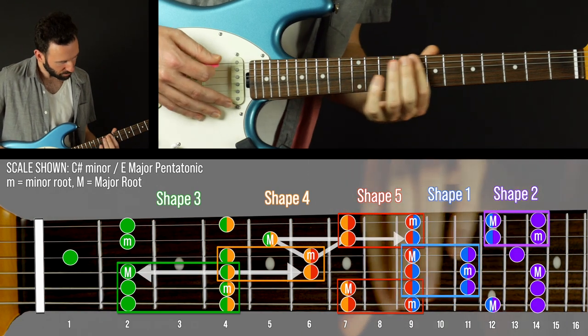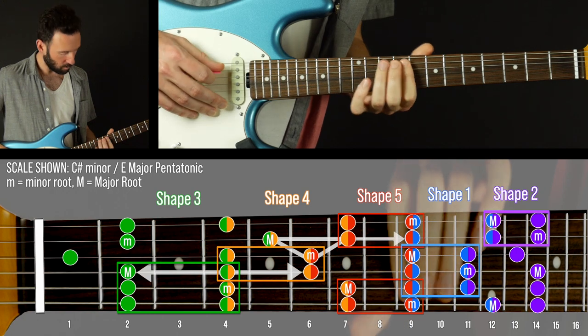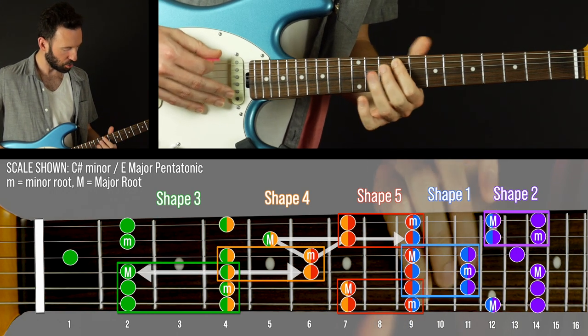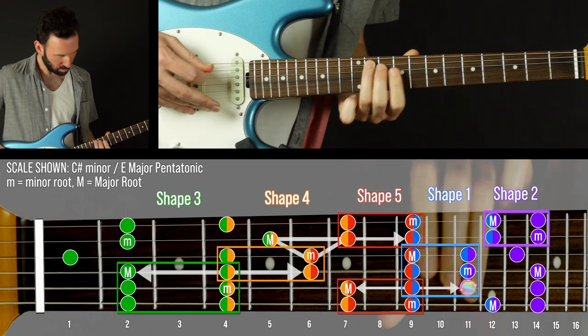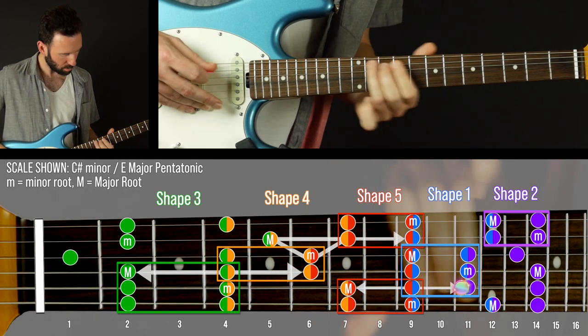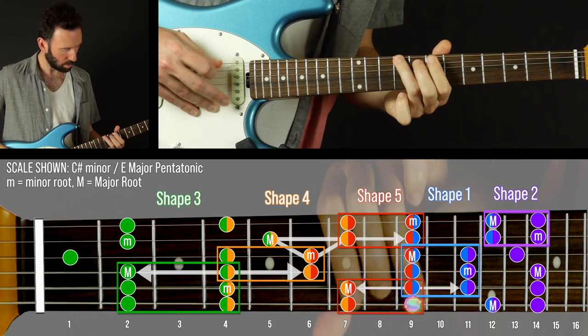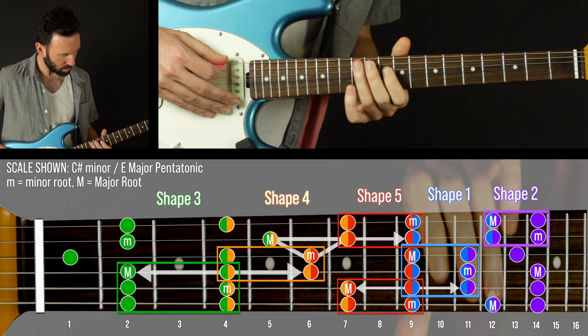Now we're going to get into the three by two in shape one and from shape five we can slide that into the three by two so we can go like this.